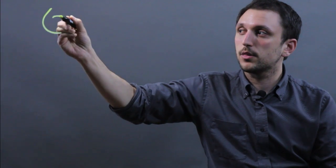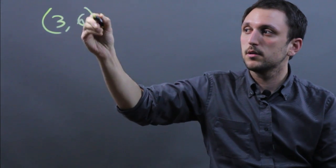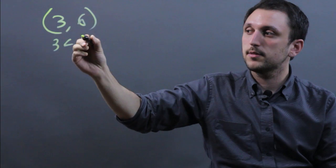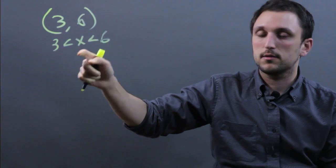Now there's two types of parentheses. There's parentheses and then there's brackets. So if you have (3, 6), this means that 3 is less than x which is less than 6.